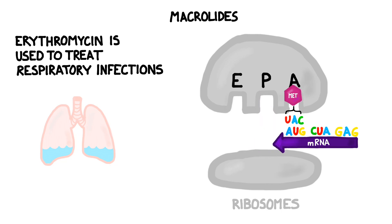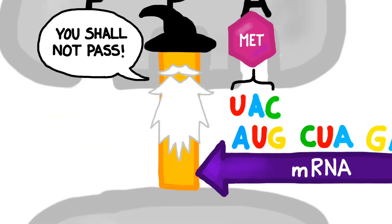Scientists believe that erythromycin prevents movement forwards from the A site to the P site. Because of this, it effectively halts bacterial protein synthesis.